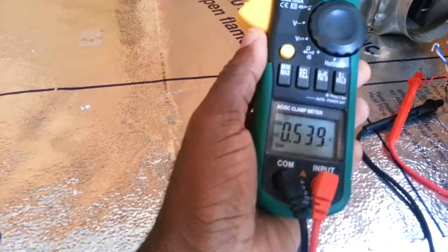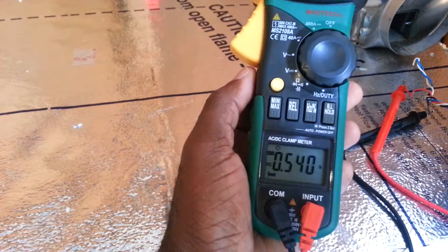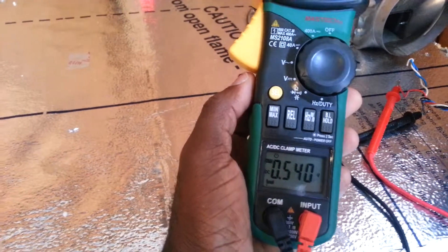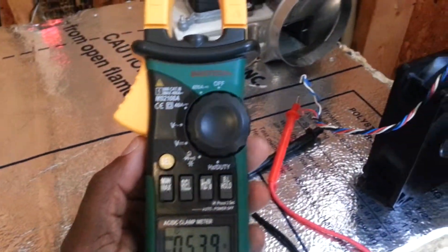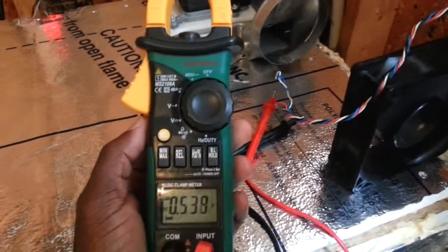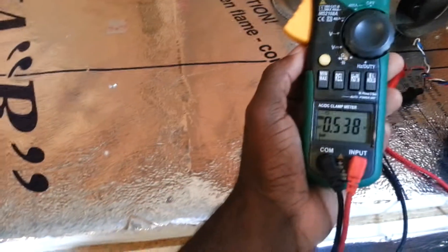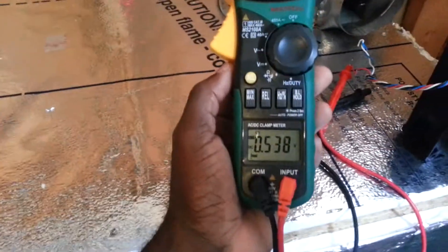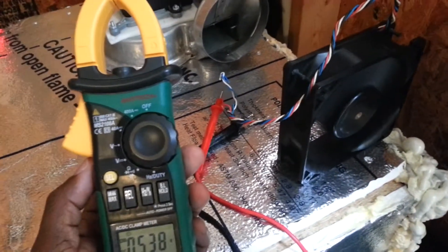Alright, on the meter actually we're getting about 0.54 volts from this DC fan right here. So yes, we're actually conducting electricity from this DC fan by just having it in front of the inducer blower fan in my solar shed.